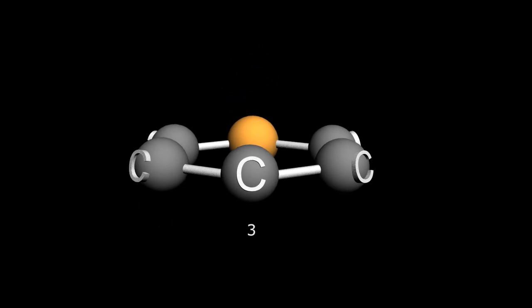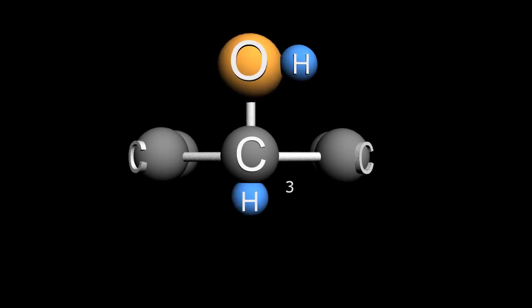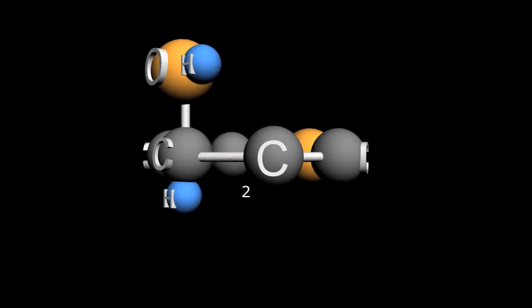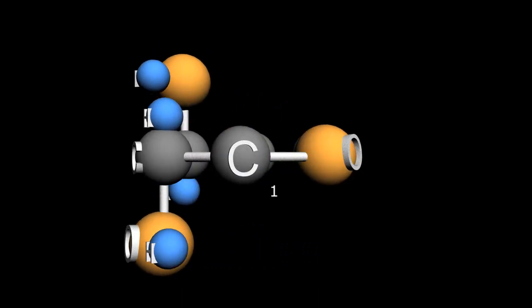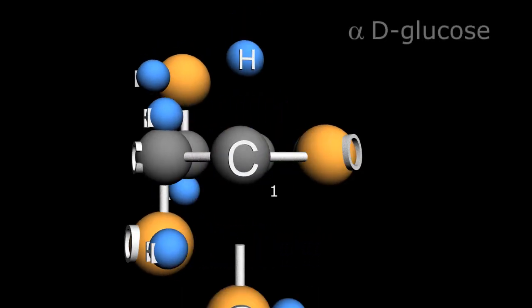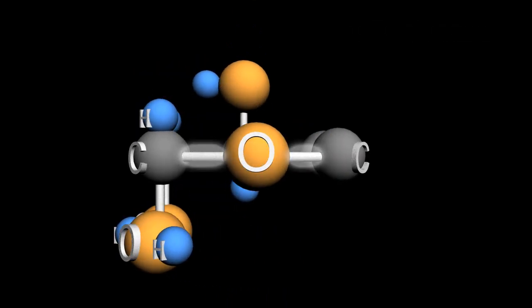On carbon 3, we have a hydroxyl group on top and a hydrogen below. Carbon 2 has a hydroxyl on the bottom and a single hydrogen above. And carbon 1, similarly, has a hydroxyl on the bottom and a single hydrogen above. Oxygen already has its requisite two connections and therefore doesn't need any side chains.